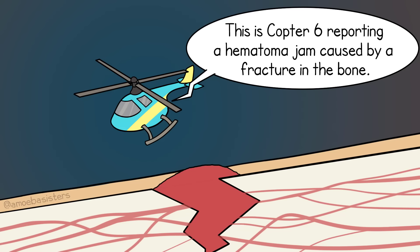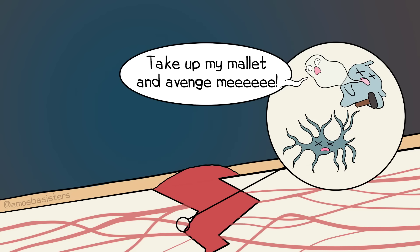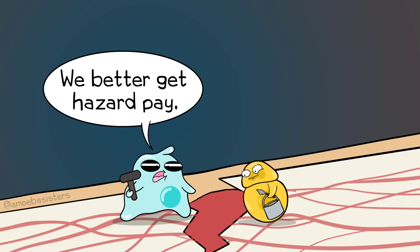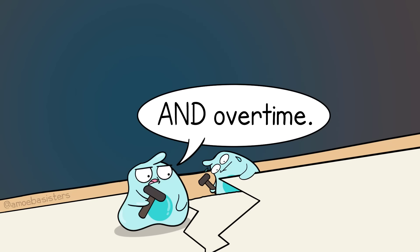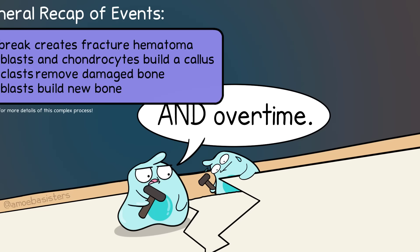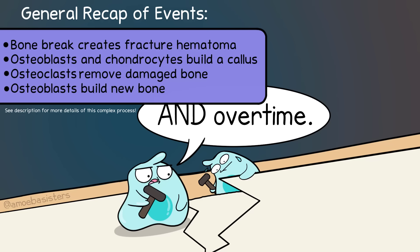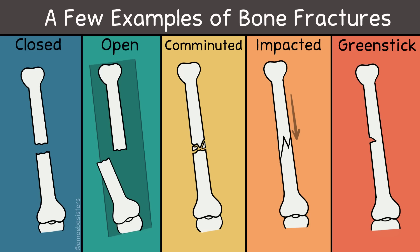What happens when a bone breaks? After a break, there is typically a fracture hematoma — a collection of blood that forms at the site of the break because bones are very vascular. Blood is blocked from reaching nearby bone cells, so those cells generally die. Thanks to chondrocytes and osteoblasts, an internal callus and external callus form to keep things together. The internal callus is mainly cartilage; the outer callus is a mix of cartilage and bone. Osteoclasts remove the damaged bone, and osteoblasts remodel and make new bone there. Many fractures heal in 6 to 8 weeks, though this varies by variables and bone type.